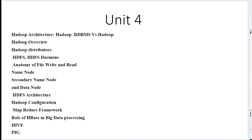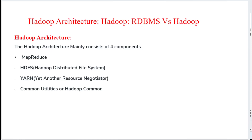Today I'm going to discuss Unit 4 in Big Data Analytics. The topics included are: Hadoop architecture, differences between RDBMS versus Hadoop, Hadoop overview, Hadoop distributors, important points about HDFS, anatomy of file read and write, name nodes, secondary name nodes, data nodes, HDFS architecture, Hadoop configuration, Hadoop MapReduce framework, the role of HBase in big data processing, and a brief overview of Hive and Pig.